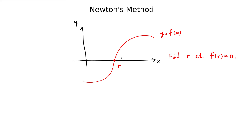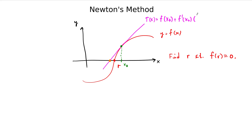The process we use is we choose a nearby point, call it x sub naught — this is our initial guess. We have some reason to believe our guess is close to the zero, but it's not equal to the zero. We go up to the graph, draw the tangent line, and as long as we're close to this point, the tangent line is a good approximation of the function near this point. The equation of the tangent line t of x at x naught is f of x naught plus f prime at x naught times x minus x naught.